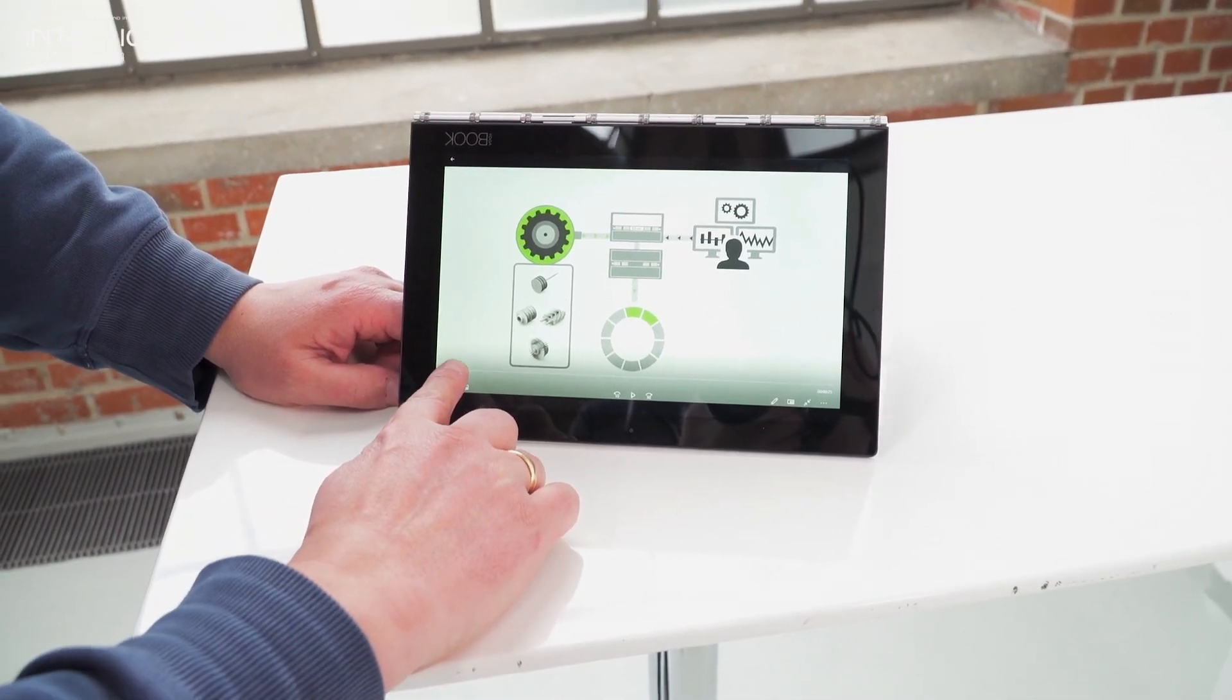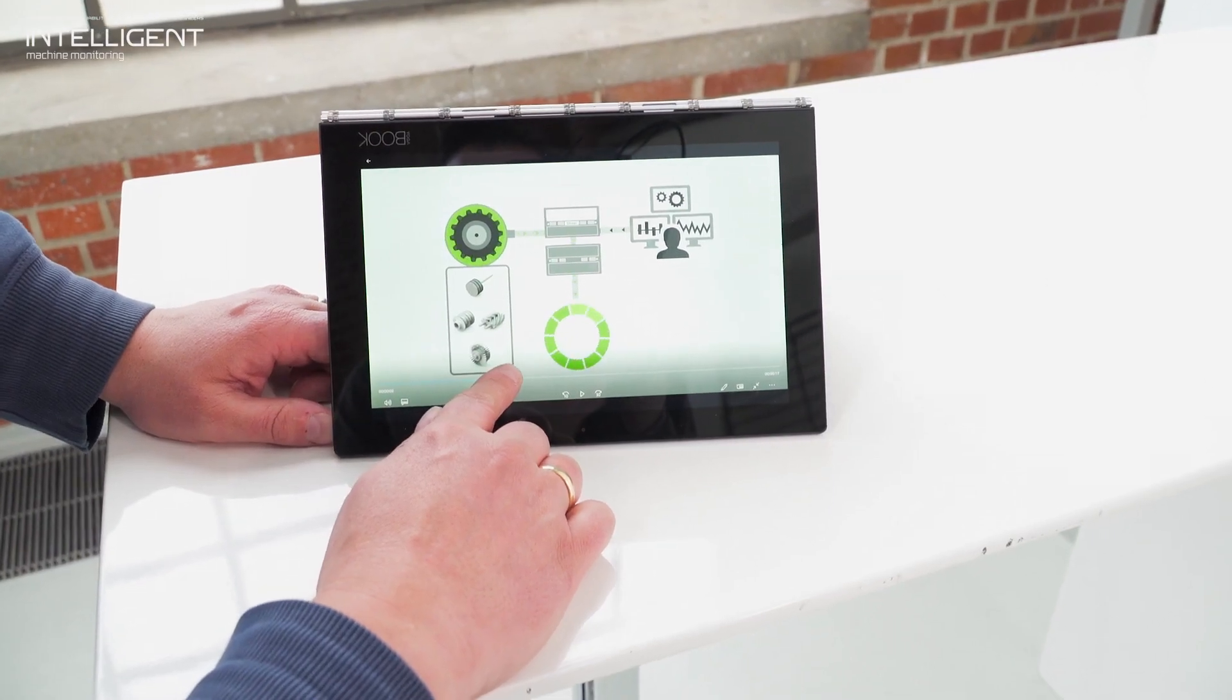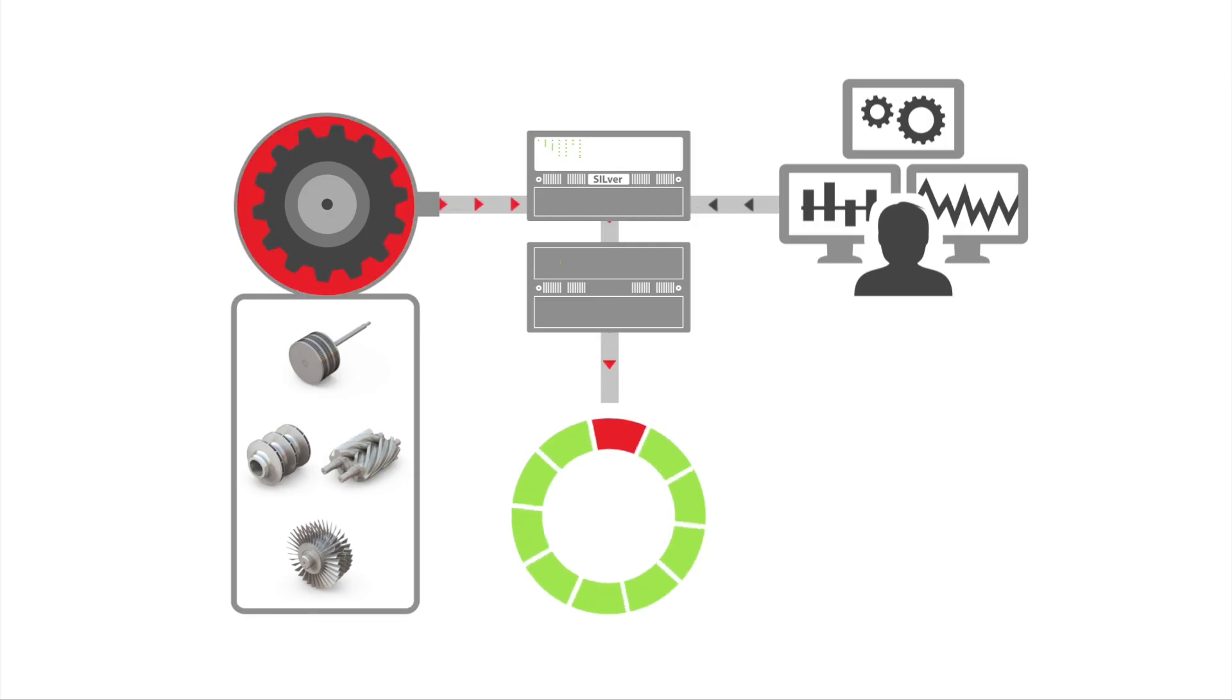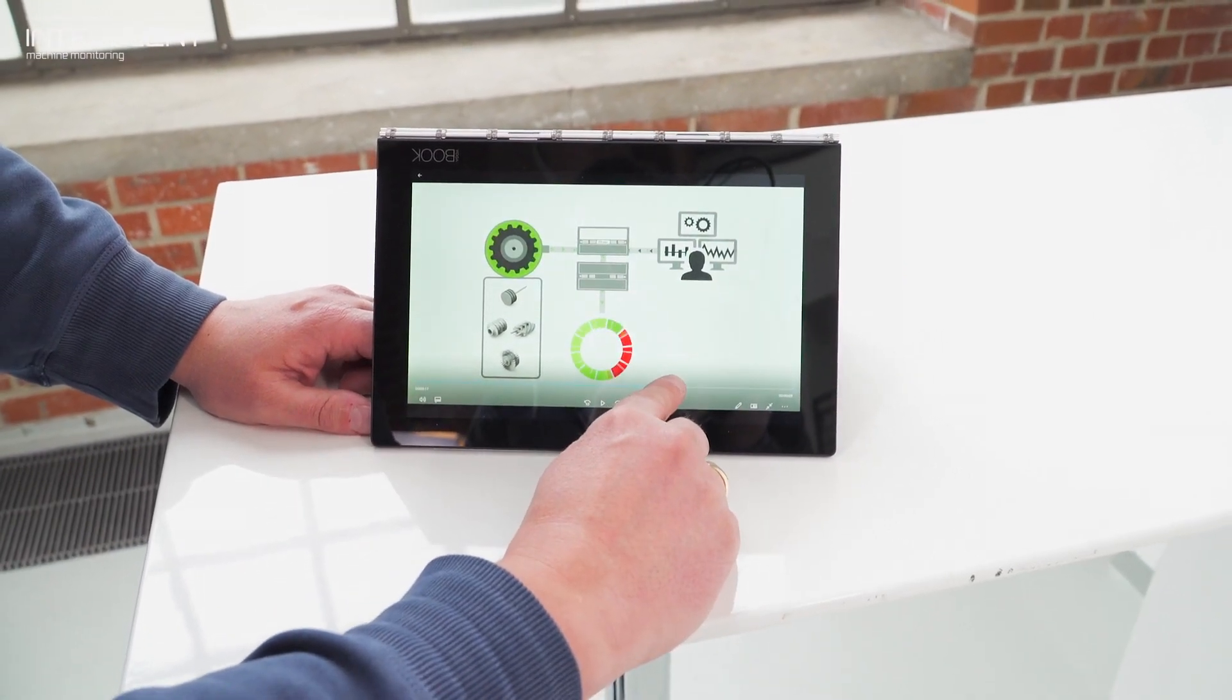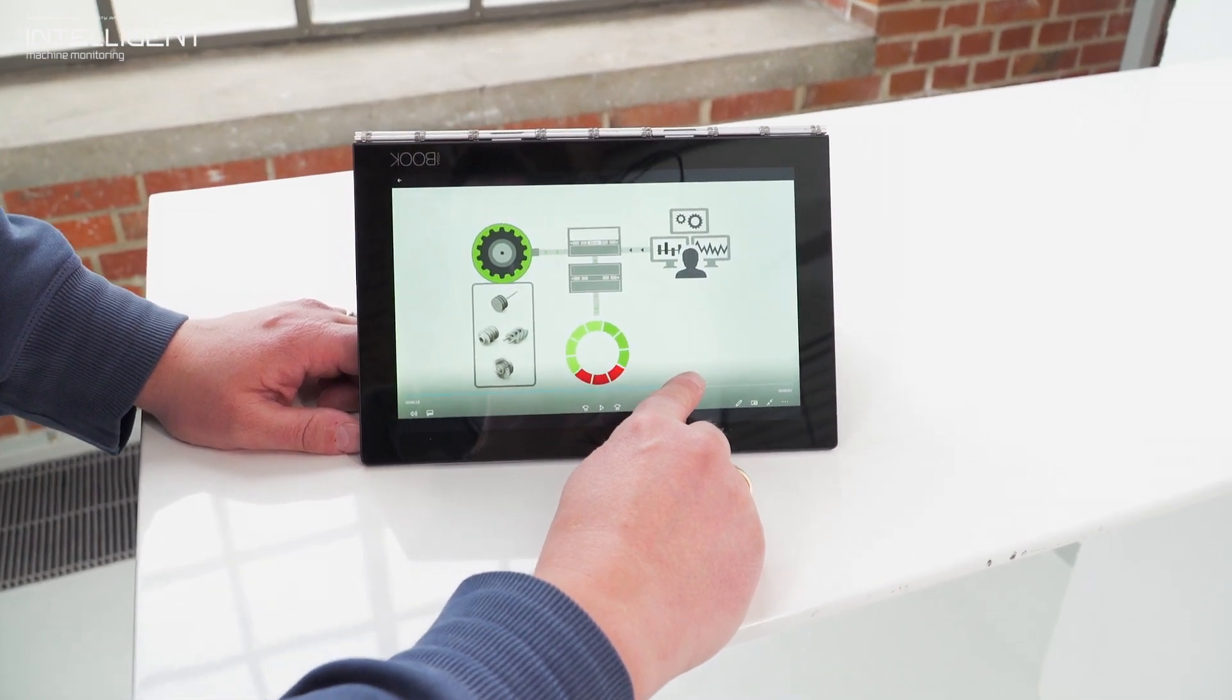So normally the ring buffer information will constantly record all information first in first out and overwrite it. But if an event occurred like here, the information will be recorded three minutes when the event occurred and seven minutes before.